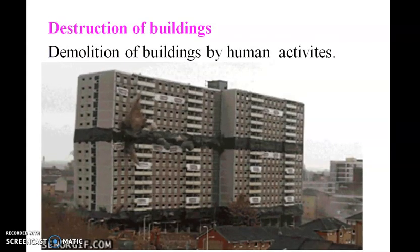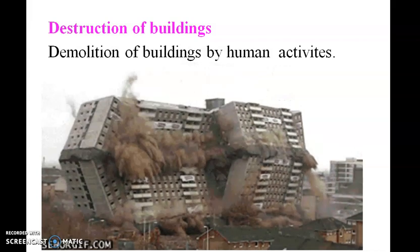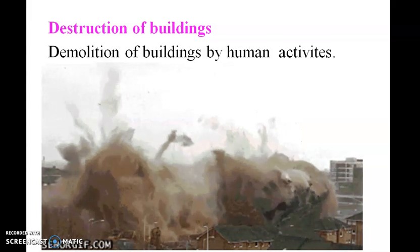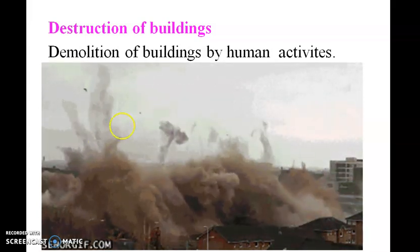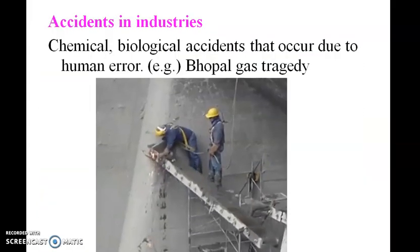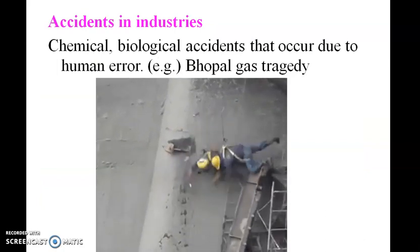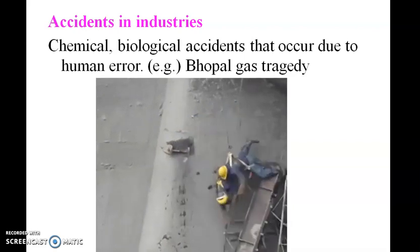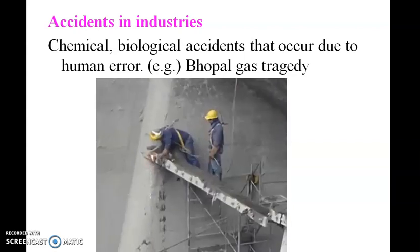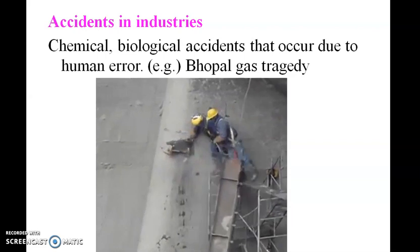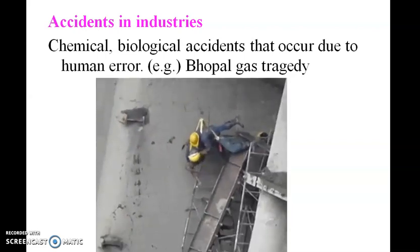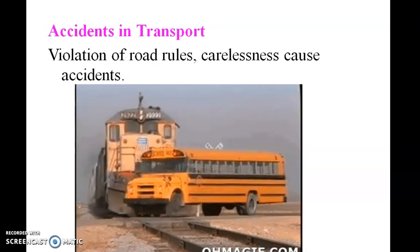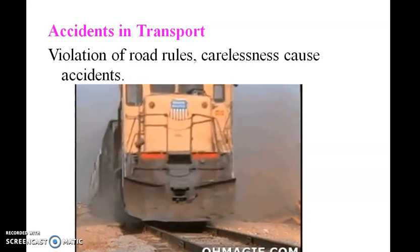Destruction of buildings: demolition of buildings by human activities. Accidents in industries: chemical and biological accidents that occur due to human error. Accidents in transport: violation of road rules and carelessness cause accidents.